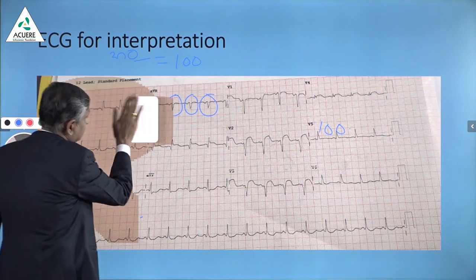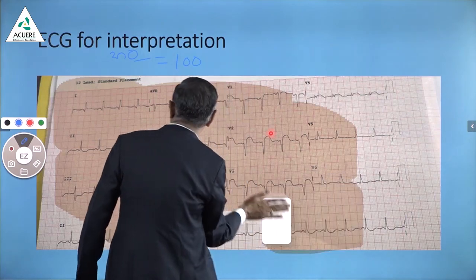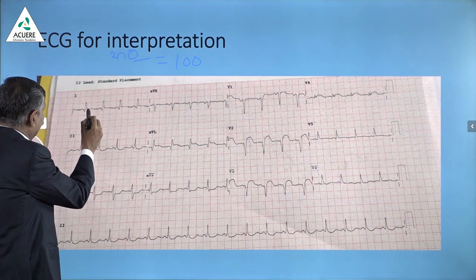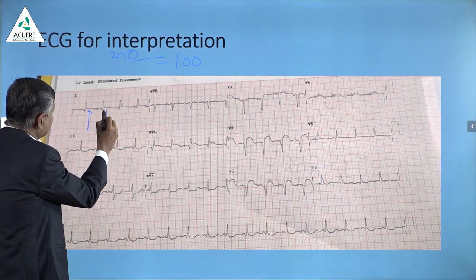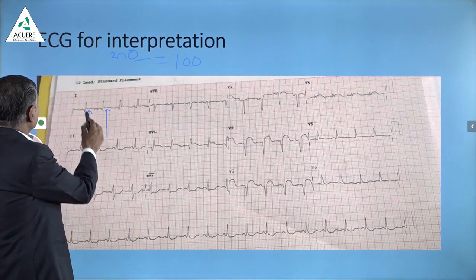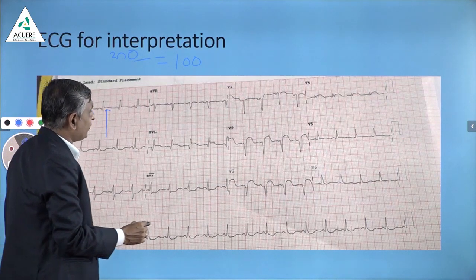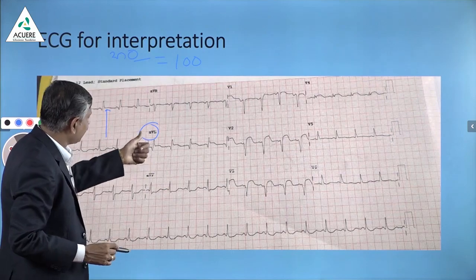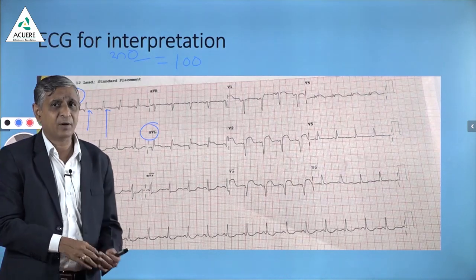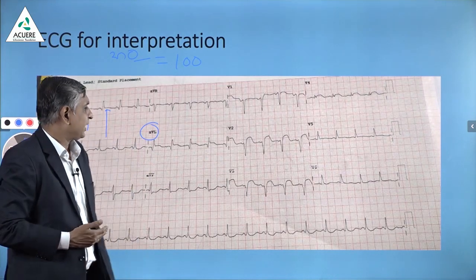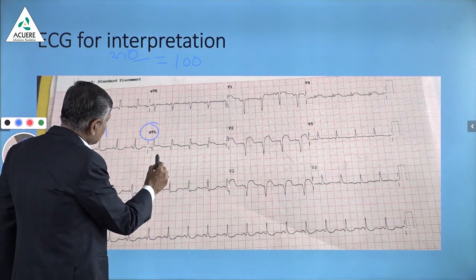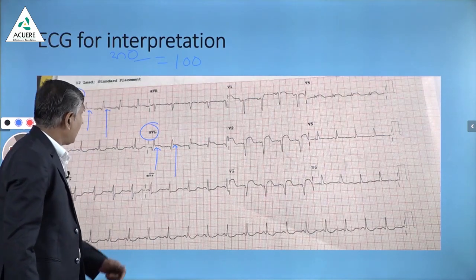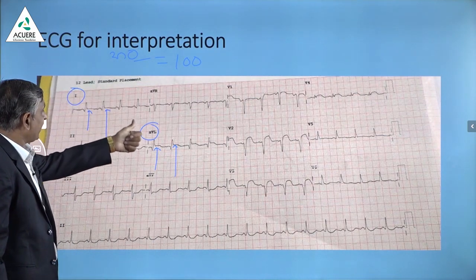In this particular ECG, starting from lead one, you will find that there is a little ST elevation. Whenever you see lead one, you should always check AVL as well, because both of these represent the lateral side — the upper lateral side of the heart. In this AVL also, you are getting ST elevation. So ST is elevated in both lead one and AVL.